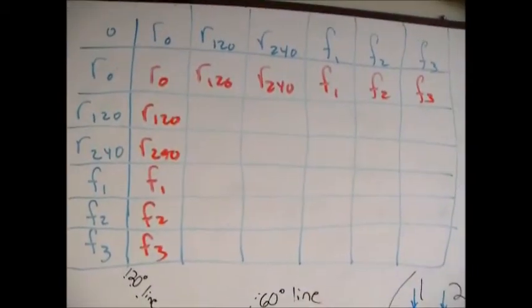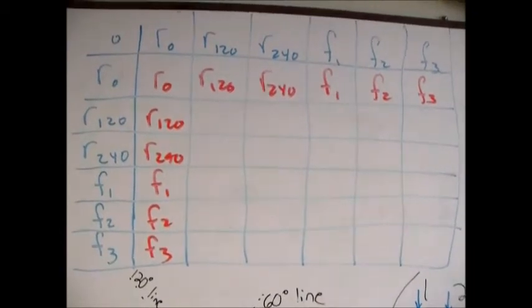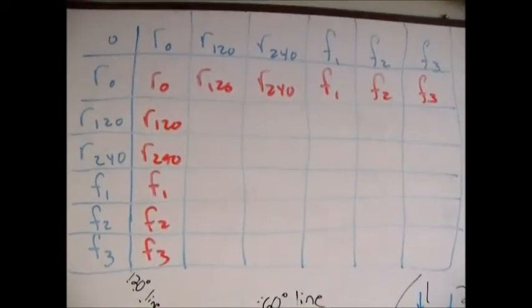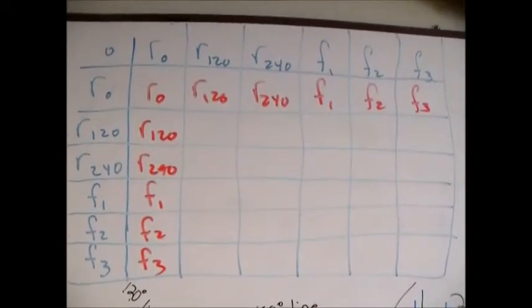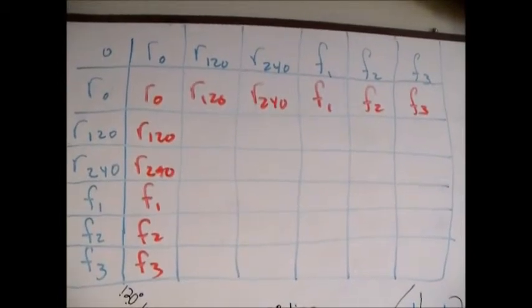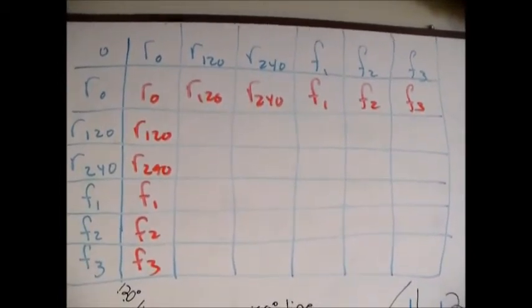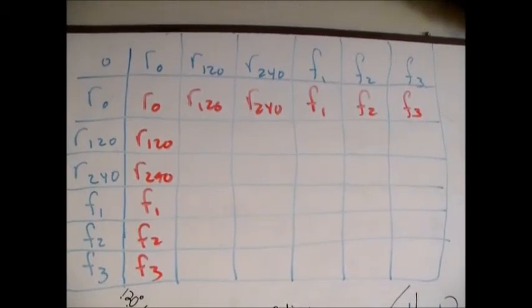And when we go back to make the group table, remember that the elements that are compositions with the identity, which is the rotation through zero degrees, they don't change. So we can simply copy them down in the first row and first column of the table.